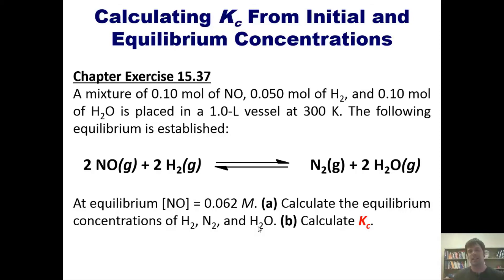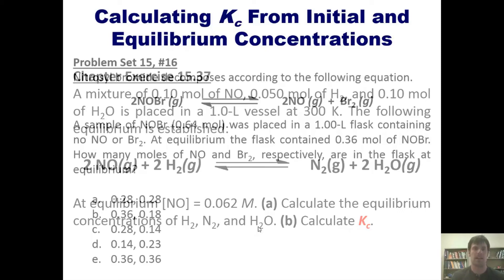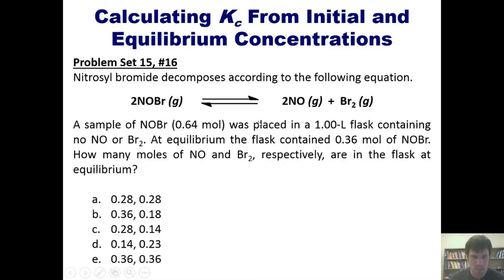You can then click the link down here in which I will do it for you on the board. Now this example. Nitrosyl bromide, this crazy compound right here, decomposes according to this equation. A sample containing this many moles of nitrosyl bromide is placed in a one liter flask containing zero or no nitrogen monoxide and bromine. At equilibrium, the flask contains this many moles of nitrosyl bromide. How many moles of NO and Br2, respectively, are in the flask at equilibrium?